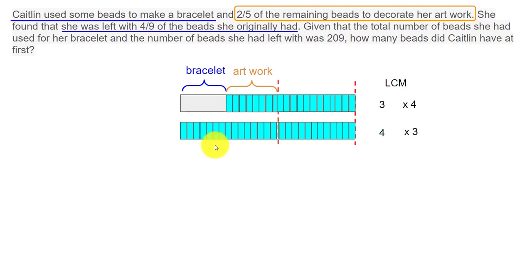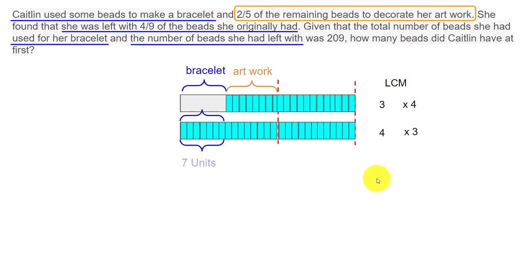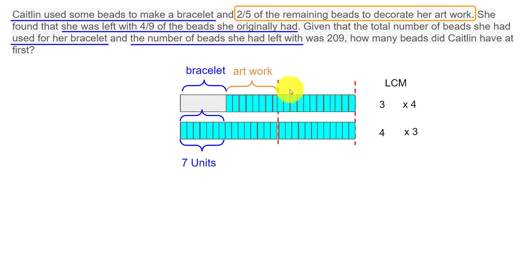Now I can easily make out that this portion here is equal to the number of beads used for the bracelet. We can count: one, two, three, four, five, six, seven — that's seven units for the bracelet. The remaining units she's left with account for the rest of the diagram.